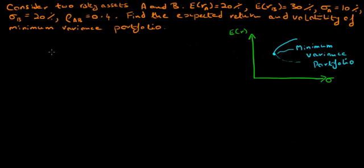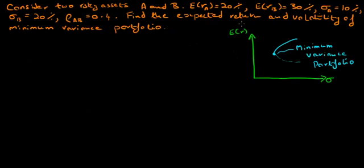In this video, we will learn how to solve for the minimum variance portfolio when we have two risky assets. The exercise we will cover is as follows: consider two risky assets A and B. The expected return on asset A is 20%, the expected return on asset B is 30%, the volatility of asset A is 10%, the volatility of asset B is 20%, and the correlation between the returns of A and B is 0.4. Find the expected return and volatility of the minimum variance portfolio.